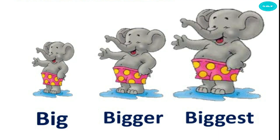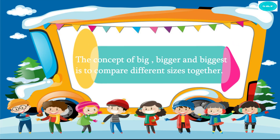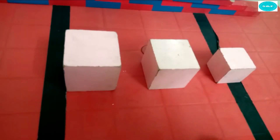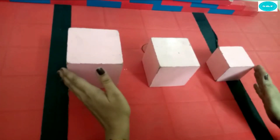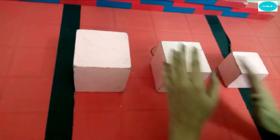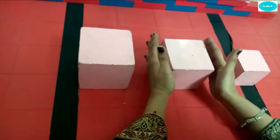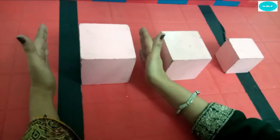First we will learn about big, bigger, biggest. The concept of big, bigger, and biggest is to compare different sizes together. Let's take an example of Q. This is the big Q. This is the bigger Q. And this is the biggest Q.